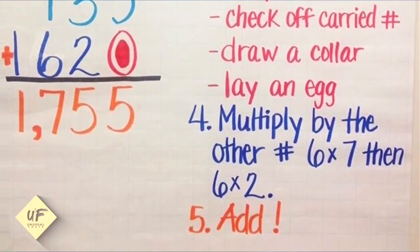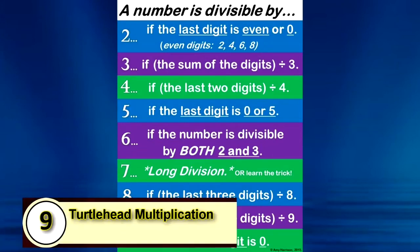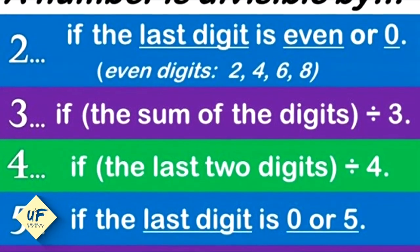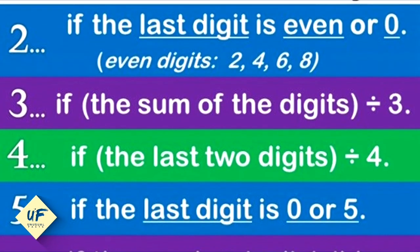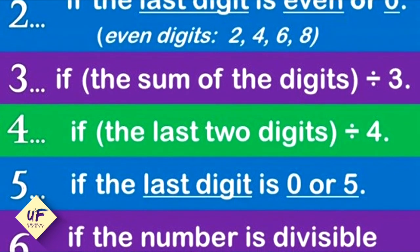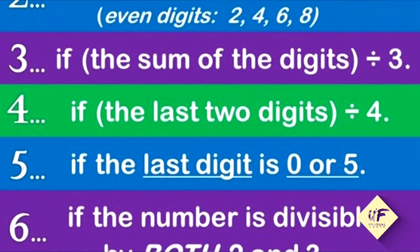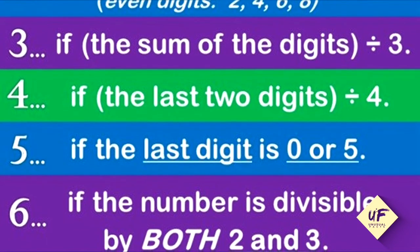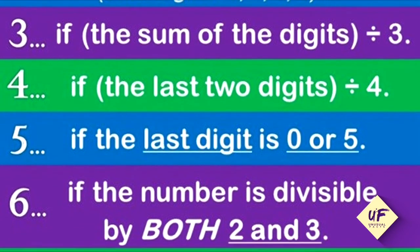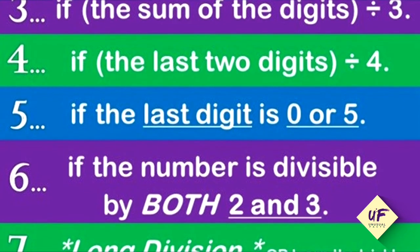Number ten: divisibility rules. A number is divisible by two if the last digit is even or zero. Even digits: two, four, six, and eight. A number is divisible by four if the last two digits are divisible by four. A number is divisible by five if the last digit is zero or five.